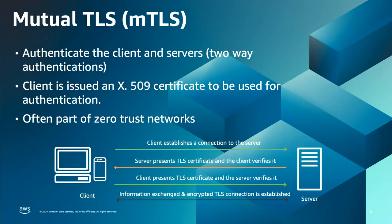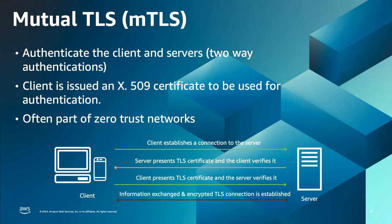Now let's look at mutual TLS. As the name suggests, it is mutual authentication between client and server. During the handshake, the client is also going to present a certificate and the server will verify that in order to continue the TLS handshake process and establish the secure connection. That means the client is issued a certificate by the service owner and the server needs to be aware of how to validate the certificate. Mutual TLS is often used in zero trust network concepts, which means there is no implicit trust — instead there is continuous verification for each client, user, device, or network track.